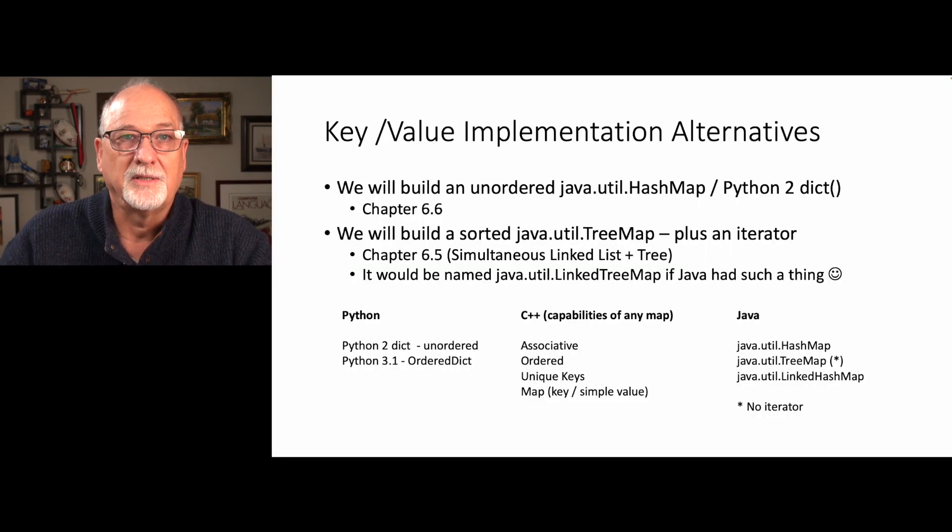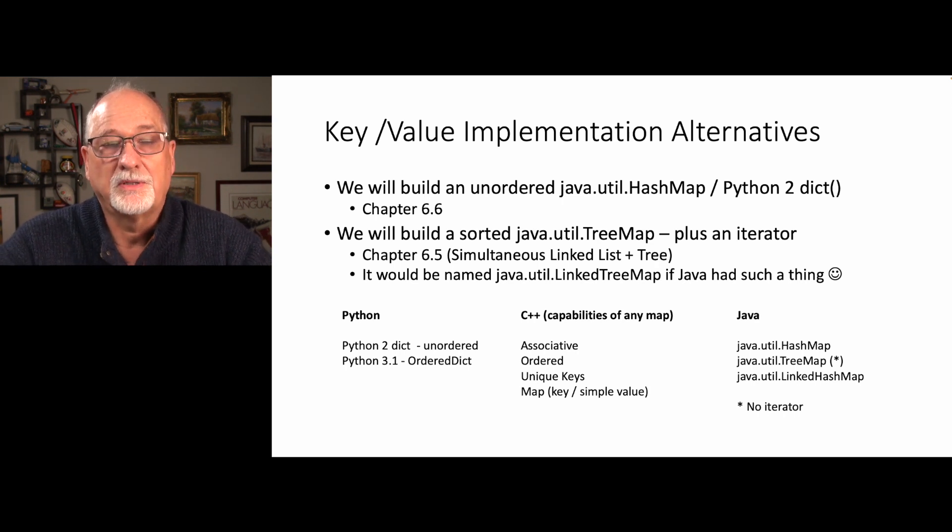But I'm getting ahead of myself. So the idea here is we're exploring different key-value implementation alternatives. We built an unordered Java-based hash map, which is like a Python 2 dictionary. If you recall, Python 2 had unordered hash maps, which meant you ended up with your stuff coming out in a random order.